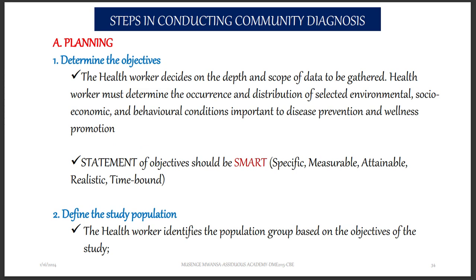When determining the objective, you want to look at environmental, socioeconomic, and behavioral conditions important to disease prevention. You can use the SMART statement of objectives — make sure the information you want to find out is Specific, Measurable, Attainable, Realistic, and Time-bound. It should be within a time frame, because not all information is valid for long. For example, if you want to find out about COVID-19, that is bound to a specific period in which the condition exists or existed.